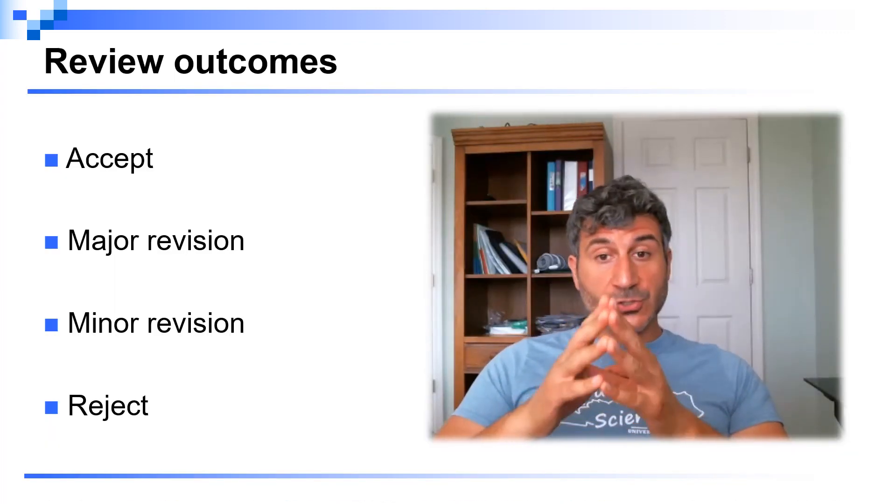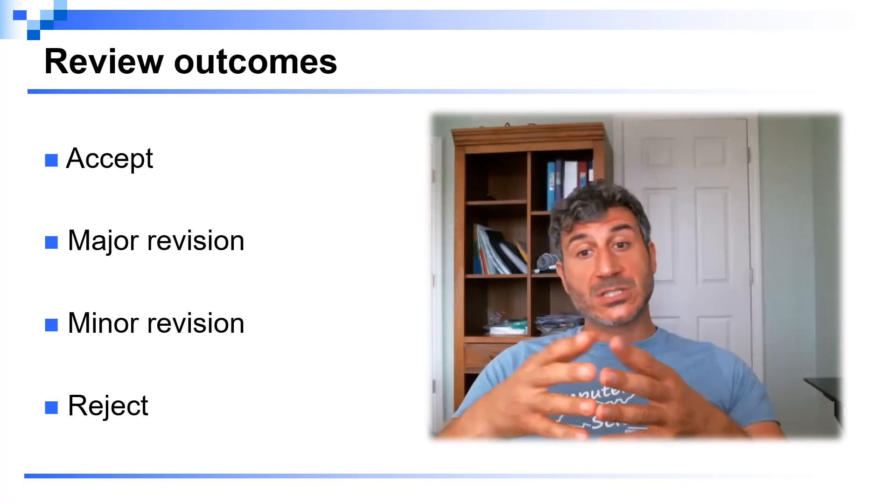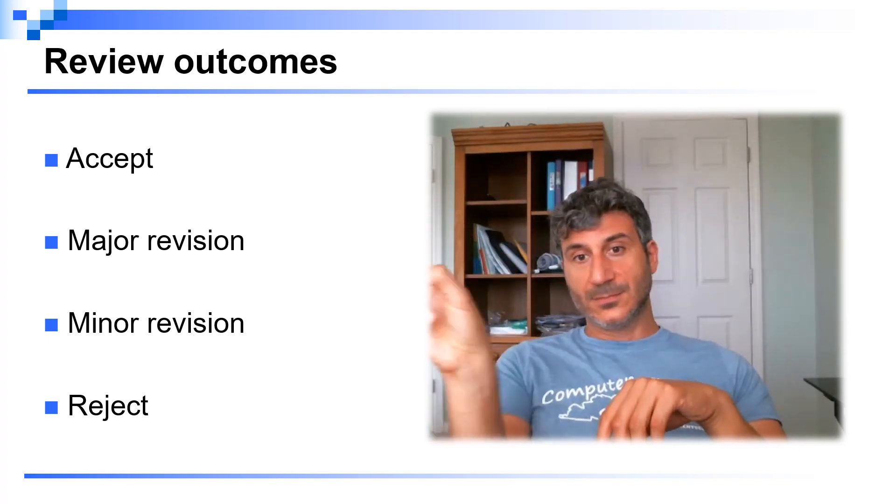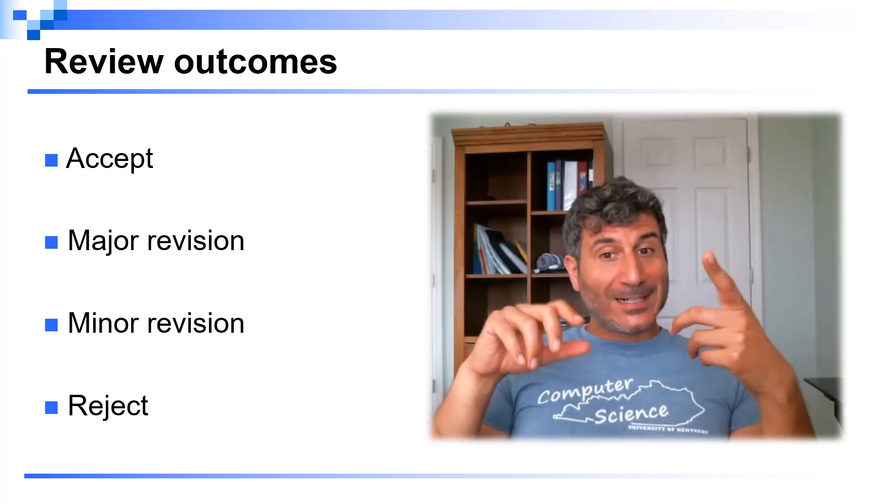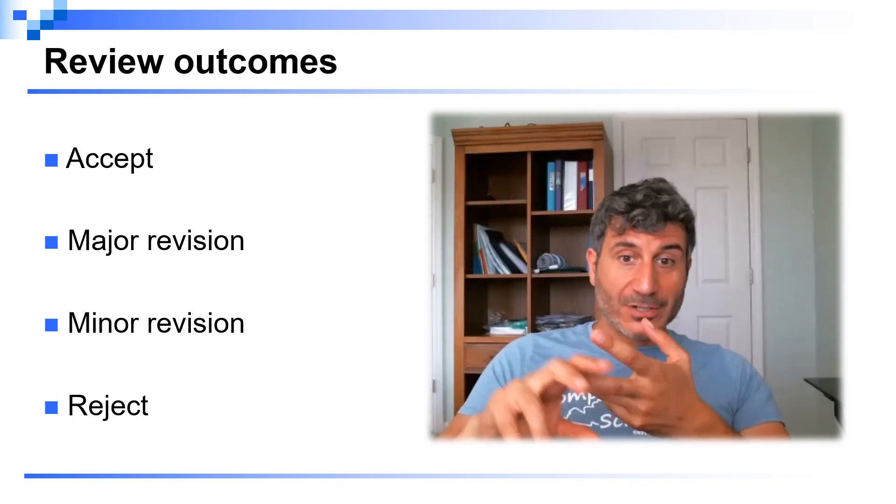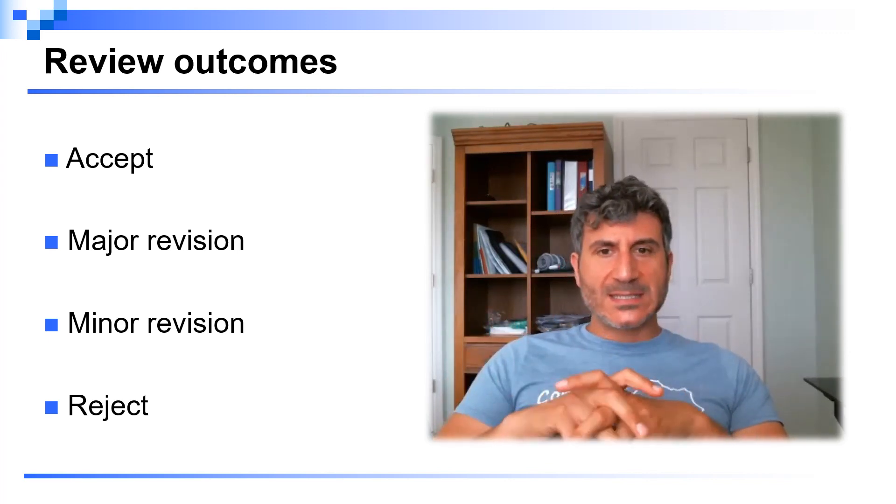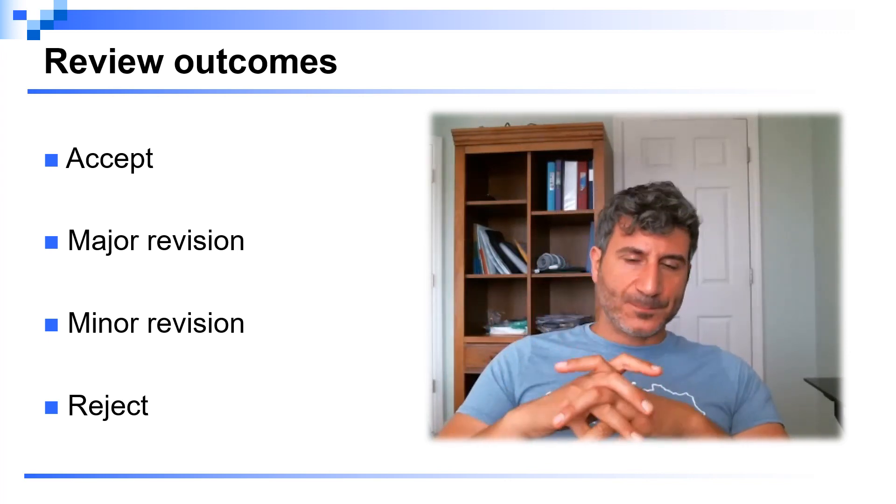When you receive the decision on your journal submission there could be several possible outcomes and these are summarized over there. So these are accept, major revision, minor revision and reject. There are a few other ones that could happen but they are definitely rare.